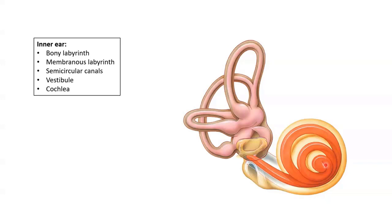The bony labyrinth is a series of cavities within the temporal bone divided into three areas: the three semicircular canals, the vestibule which is the round middle portion, and the cochlea which looks a bit like a snail. The bony labyrinth contains perilymph, a fluid chemically similar to cerebrospinal fluid, that surrounds the membranous labyrinth. The membranous labyrinth is a series of sacs and tubes that sit inside the bony labyrinth and houses the receptors for both hearing and equilibrium, containing endolymph, another type of fluid which we will talk more about shortly.